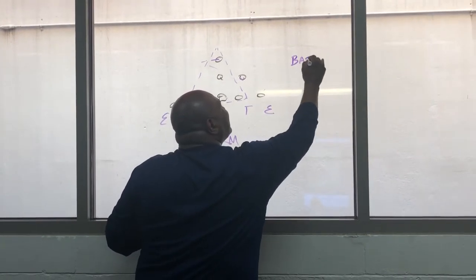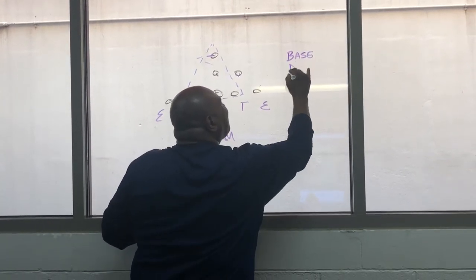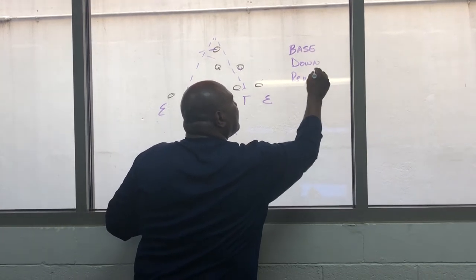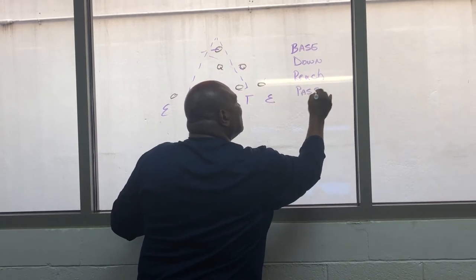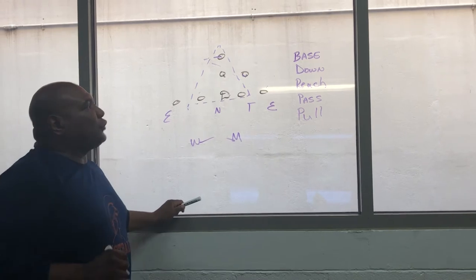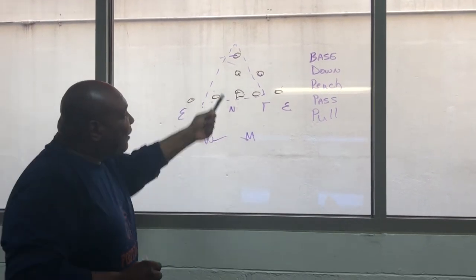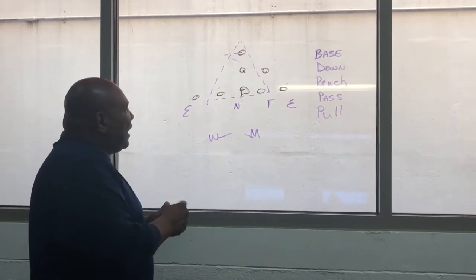Now, let's talk about how to read those guards. We're going to talk about base, defending the base block. We're going to talk about defending the down, the reach, pass block, and of course, the pull. Those are the five basic fundamentals of how to take on the triangle.